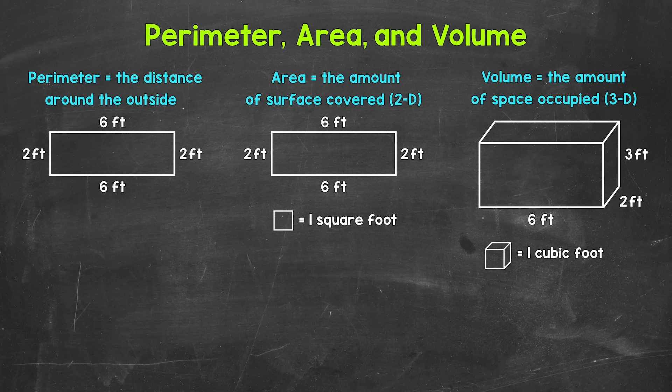Perimeter is the distance around the outside of a shape. We will use a rectangle for our example of perimeter. So the perimeter is the distance around the outside of this rectangle. We can find the perimeter by adding the lengths of all of the sides.